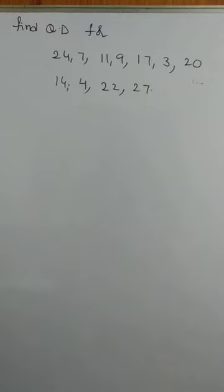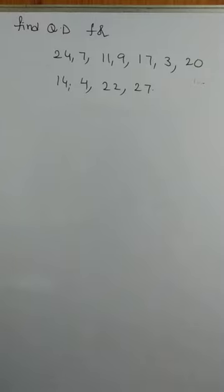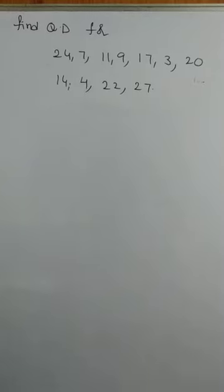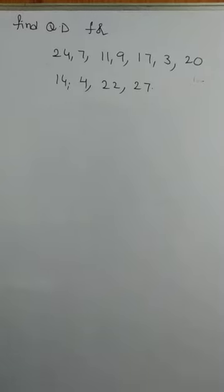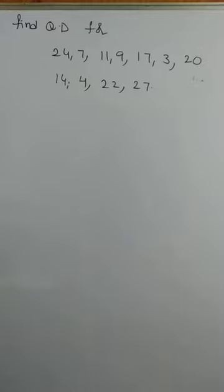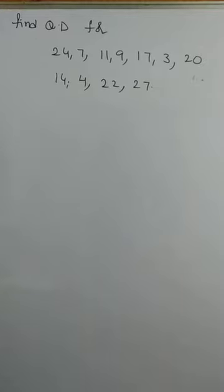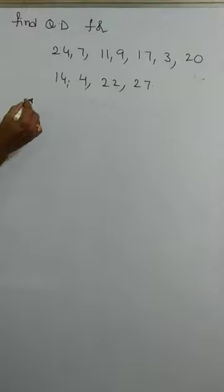Find the quartile deviation for the following data. Quartile deviation is a positional measure of dispersion. Dispersion means you have to find the variations. The variation is nothing but Q3 minus Q1 by 2.